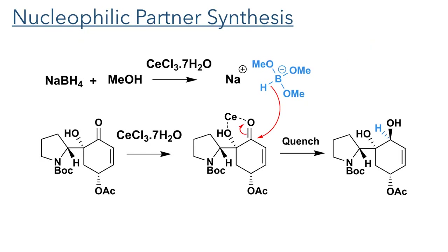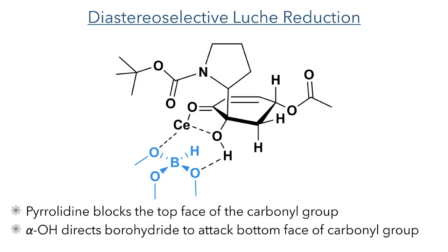Moving on, we can now turn our attention to the synthesis of the nucleophilic coupling partner. This begins with a Luche reduction of the previously synthesized acetylated cyclohexanol. The Luche reduction uses sodium borohydride and cerium trichloride to selectively reduce the carbonyl group in preference to conjugate reduction of the alkene. The Luche reduction proved to be diastereoselective for the trans-diol product. This result can be rationalized by examining the mechanism: the cerium coordinates to the carbonyl oxygen and also to the alpha-hydroxyl group. The incoming borohydride is then directed by electrostatic interactions to deliver the hydride from the bottom face of the ring, an effect further reinforced by steric hindrance of the proline group which blocks the top face.